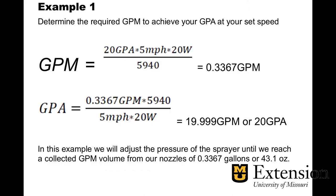In this example, we wish to spray at 20 gallons per acre. We have a 5 mile per hour travel speed, and the width between our nozzles is 20 inches. We plug these numbers into our gallons per minute equation, divide by 5940, and we see that we need to collect 0.3367 gallons per minute.